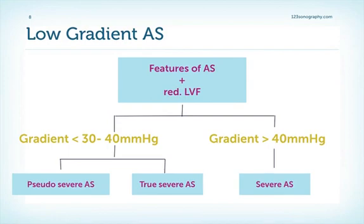From a clinical standpoint, it's very important to differentiate between patients with gradients above 40 compared to patients with mean gradients below 30 or 40 millimeters mercury. Patients who still have high gradients usually will improve their left ventricular function after valve replacement. When a patient has a mean gradient above 40, this patient has severe aortic stenosis and should be sent to valve replacement. However, if a patient has a gradient below 30 or 40, we have to differentiate patients who have true severe aortic stenosis versus those with only pseudo-severe aortic stenosis.